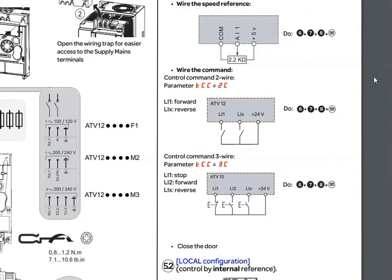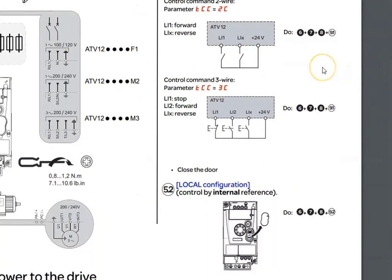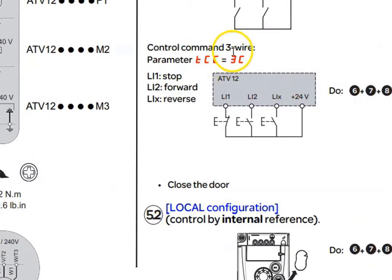Right below that, it shows Wire the Command, and it's showing a diagram for 2-wire control. We are going to use the diagram below that. We are going to use Control Command 3-wire, and we're going to set a parameter so that the drive will operate in 3-wire control mode. Now, if you look at where my mouse is, you'll notice that there's three points of reference: the stop button, the forward button, and the reverse. And the reverse has an address of logic input X. We can assign that reverse button to any one of the remaining inputs that's not used after LI1 and LI2. I'm going to draw that out for you, and it will make sense when we program it.